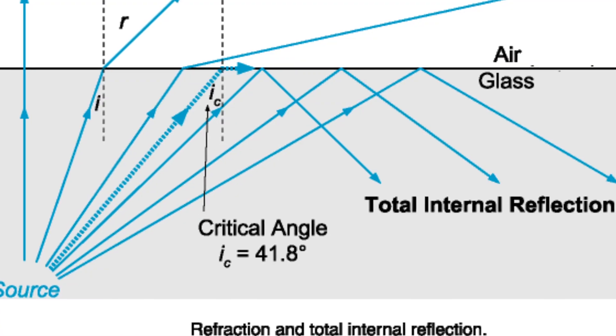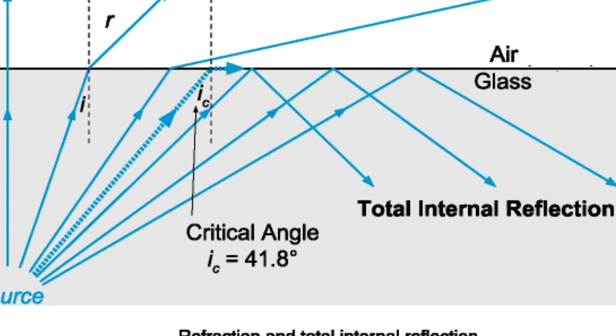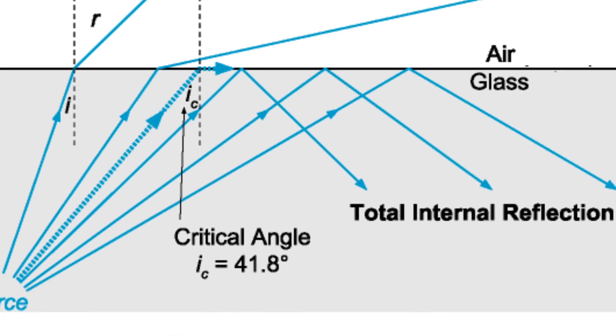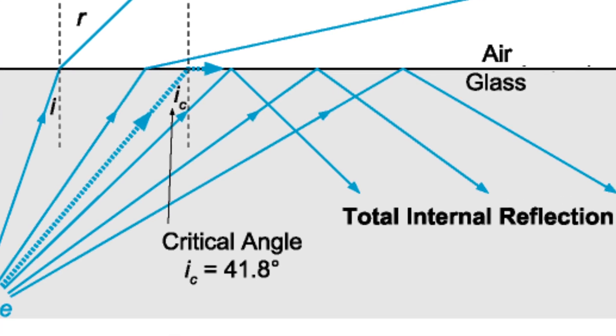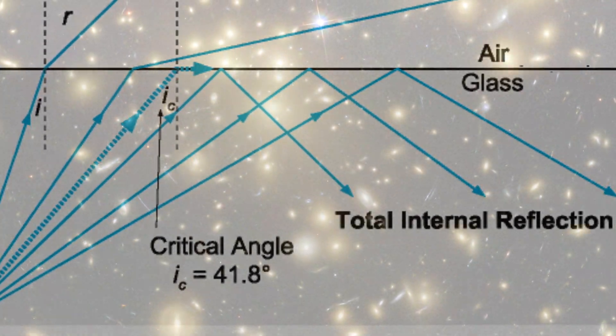Because light can't leave the shell? Can't leave the shell. There's nothing to propagate it outside, so it'll tend to do what it does when it's leaving glass and going into air. It'll be totally internally reflected if the angles are right.